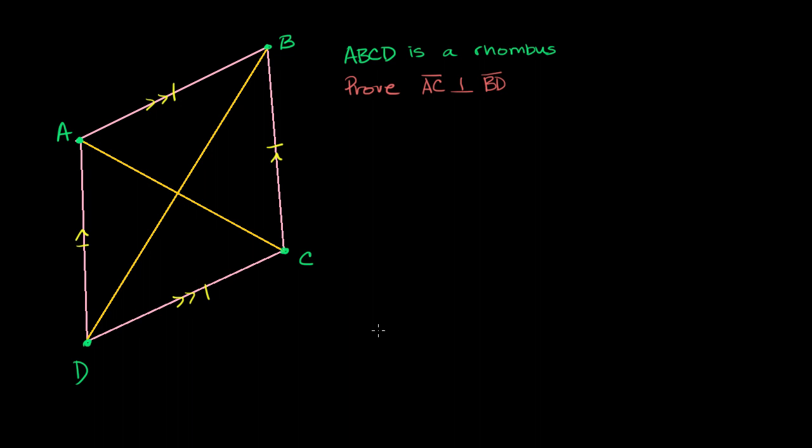Now there's other interesting things we know about the diagonals of a parallelogram, which we know all rhombi are parallelograms. The other way around is not necessarily true. We know that for any parallelogram, and a rhombus is a parallelogram, that the diagonals bisect each other. So for example, let me label this point in the center, let me label it point E.